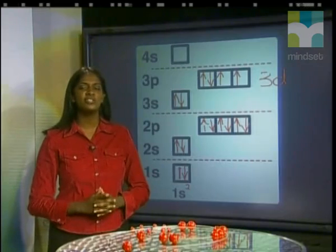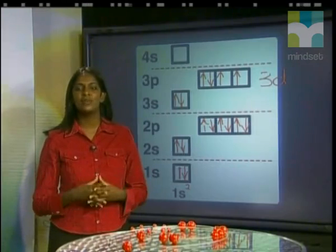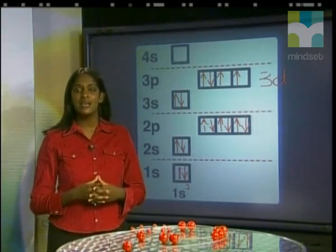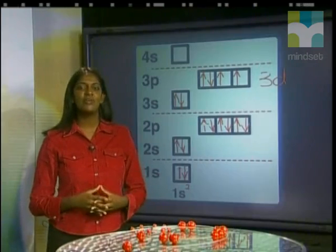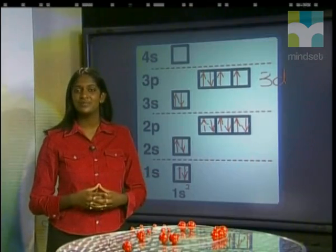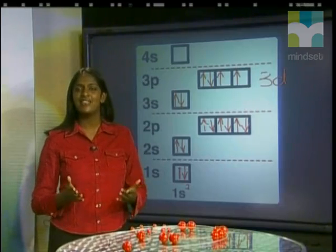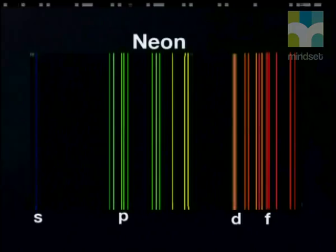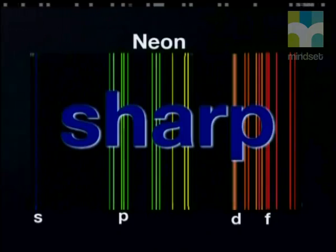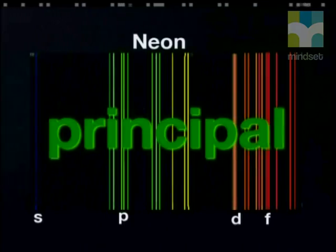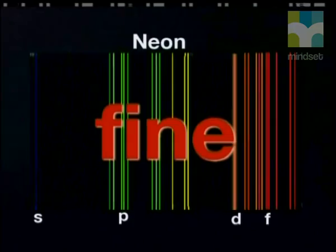There's one final link to take note of. This quantum mechanical model was developed from complicated mathematics before any experimental work was done. After the theory was developed, experimental evidence was sought, and the work of the spectroscopists was re-examined — they found some amazing correlations. All the energy calculations matched. In fact, the reason the spherical orbital is called an S-orbital is because these electrons produce sharp lines in the line emission spectra. The P-orbital electrons form principal lines, the D-orbital electrons form diffuse lines, and the F-orbital electrons form the fine lines on the line emission spectrum.